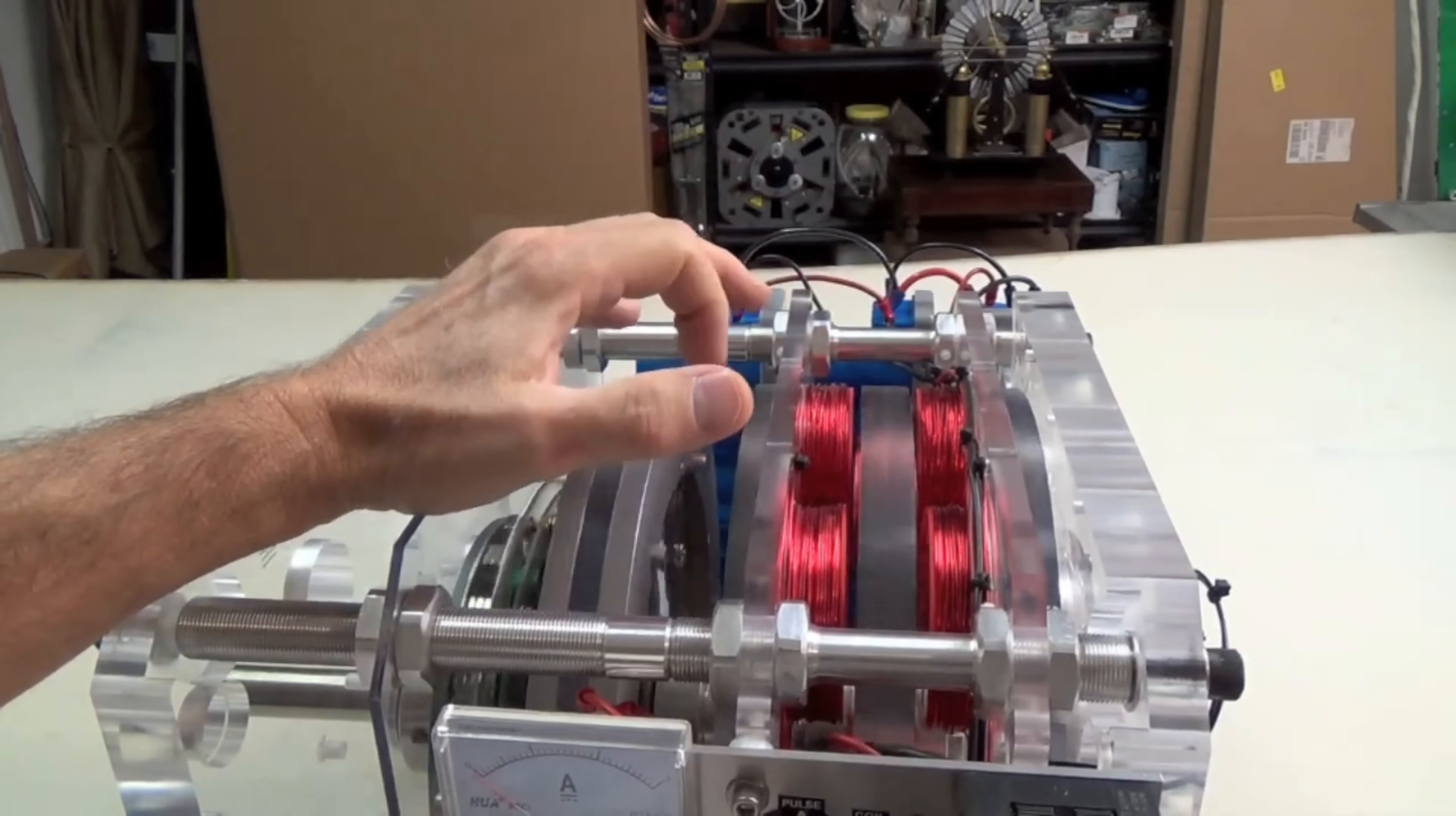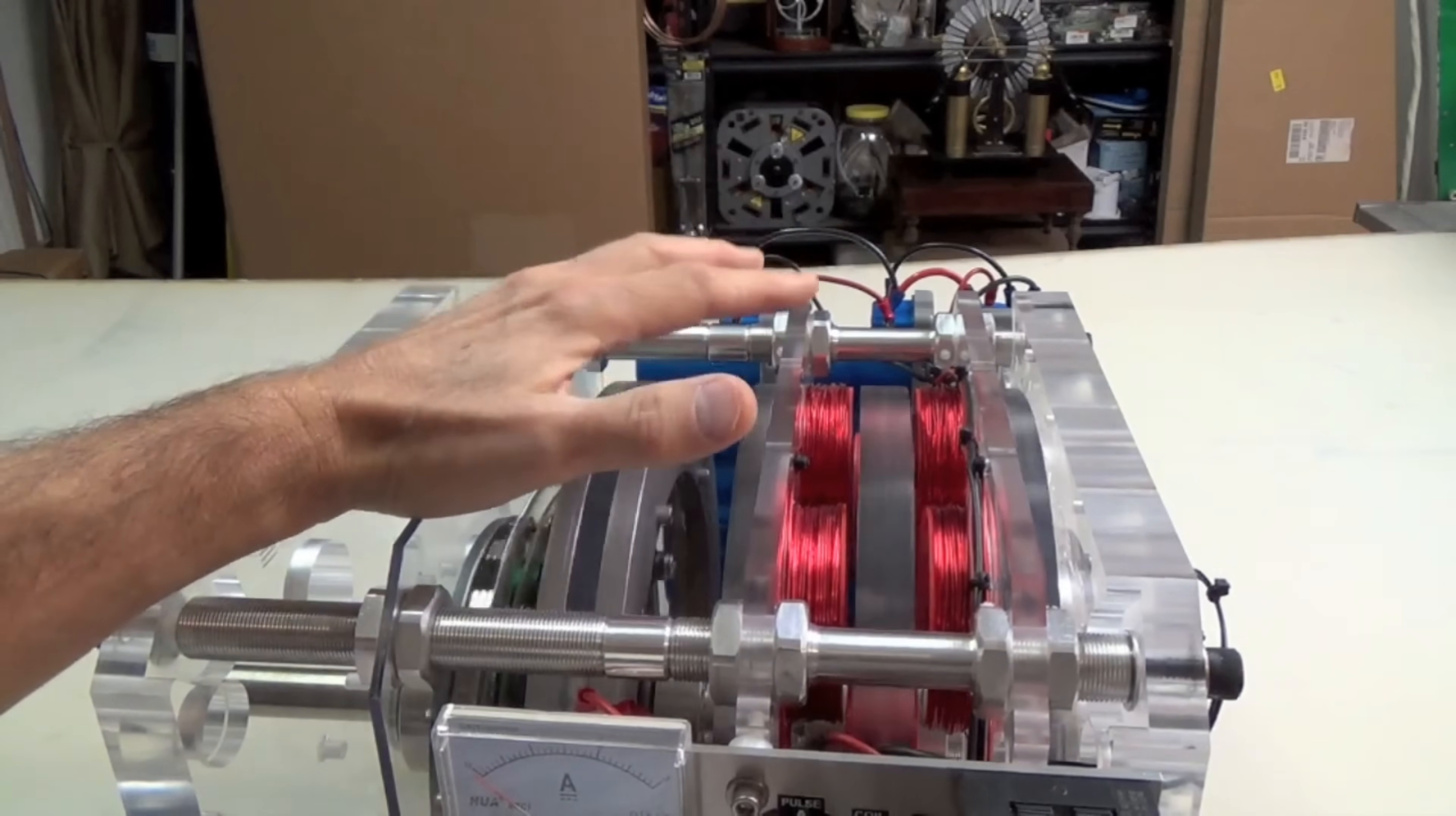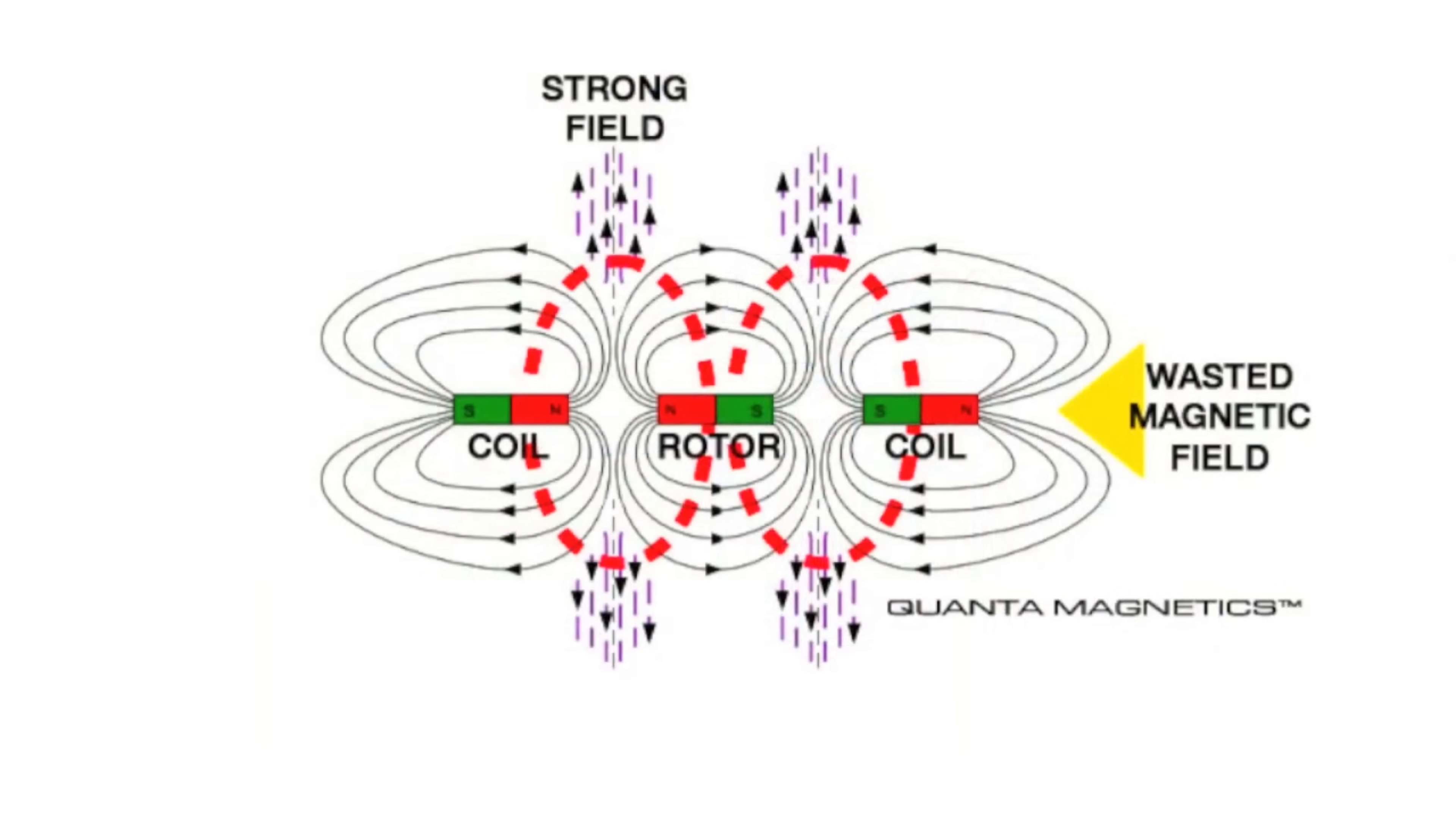With his revolutionary invention in hand, Cromry set out to protect his work, embarking on a journey to secure a patent. This process was not without its challenges, as the concept of free energy was met with skepticism and resistance from established players in the energy industry.